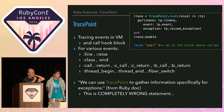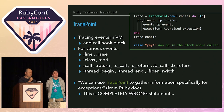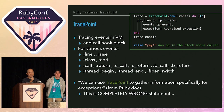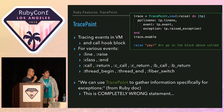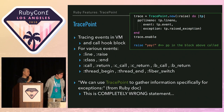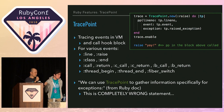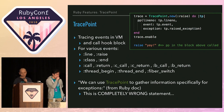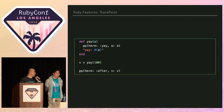The Ruby documentation says we can use TracePoint to gather information specifically for exceptions, but actually we can use it for many various events — so that documentation is completely wrong, anyway.